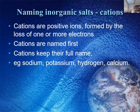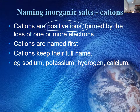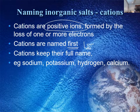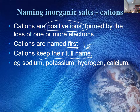Let's quickly review how we name these inorganic salts. The first part of the name is the cation — the positive ion, formed usually by the loss of one or more electrons. Cations are always named first and they keep their full name. Sodium, potassium, hydrogen, calcium — these are all examples of cations.